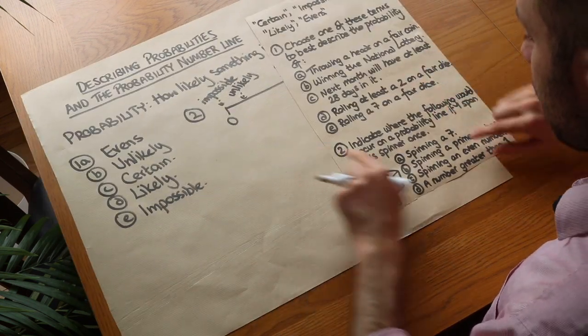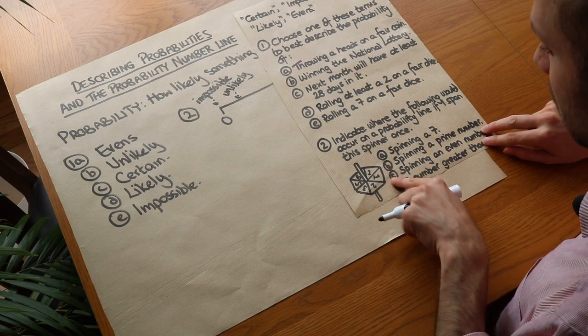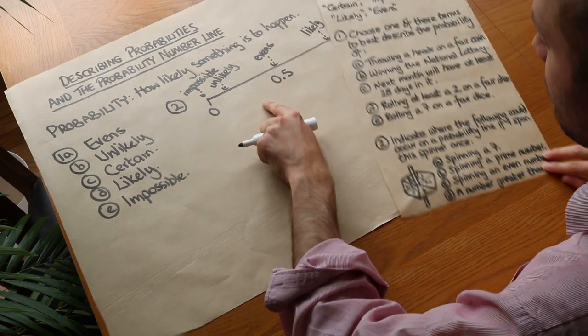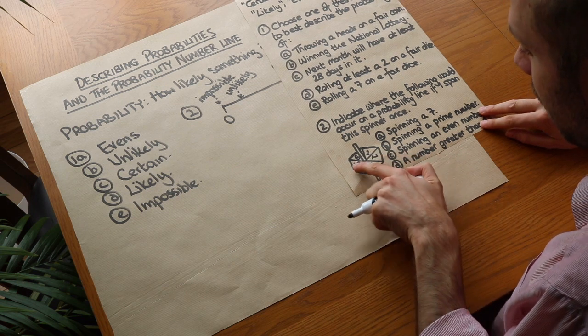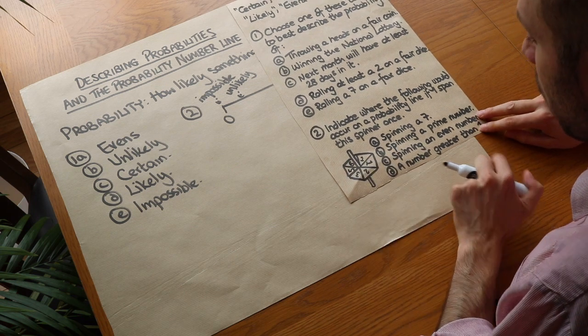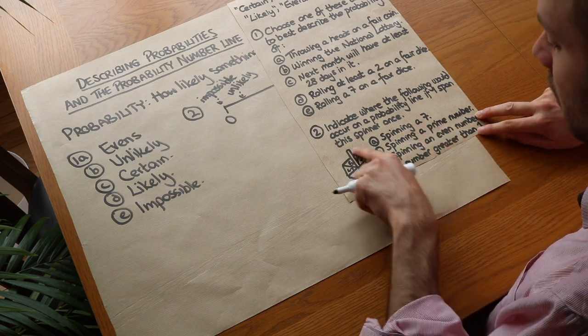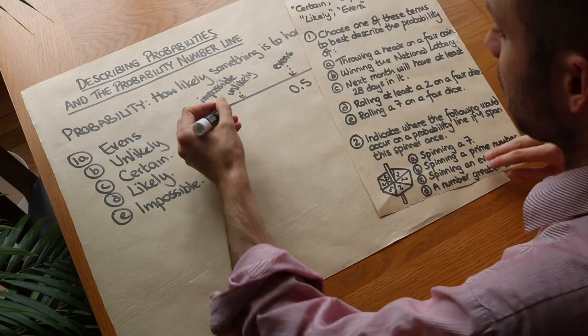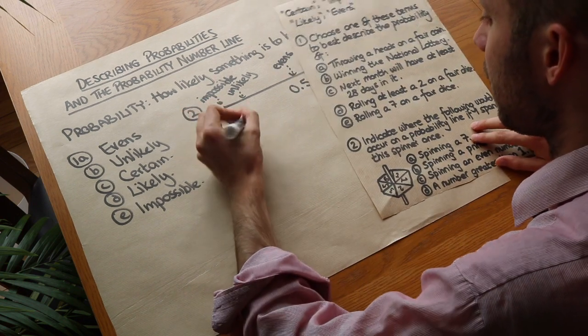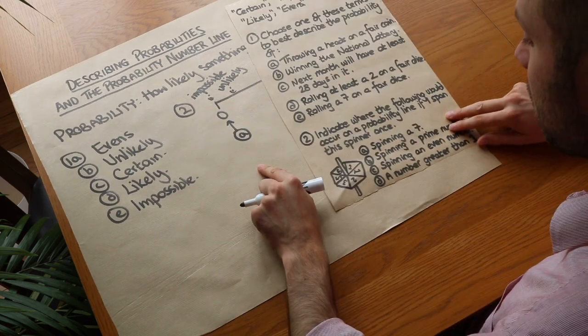So let's think about these different outcomes based on this spinner. And we want to put each of these things onto this number line. So we're spinning this spinner. We've got 1, 1, 2, 3, 5 and 6 on it. Now where on this number line would it be to spin a 7? Well, there's not a 7 on this spinner. So it's going to be impossible. So it's going to have a probability of 0. So A is going to go here. It's completely impossible.